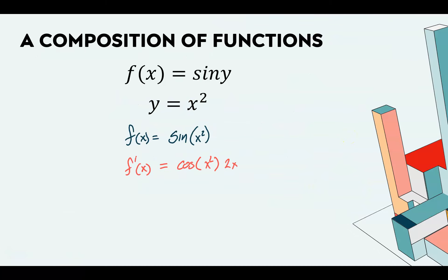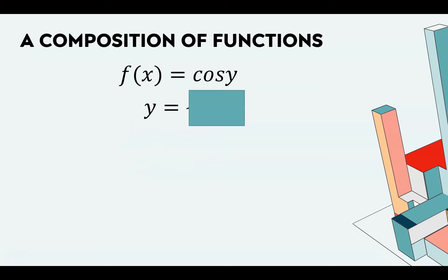Thinking back to the chain rule: if we were doing the derivative of sine of something and that something was x², we'd have cosine of x² times the rate of change of x², which is 2x. That's really all we need to know in terms of doing implicit differentiation — it's just the chain rule.